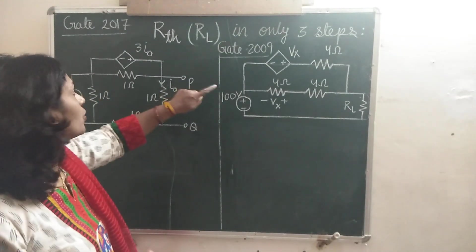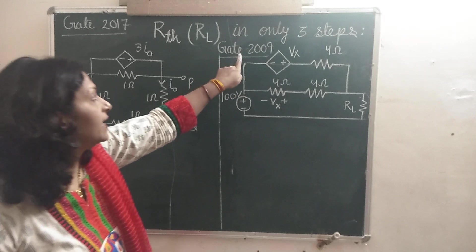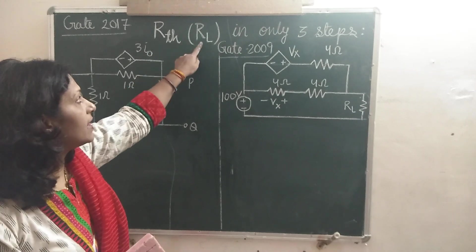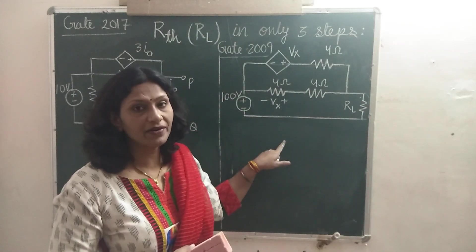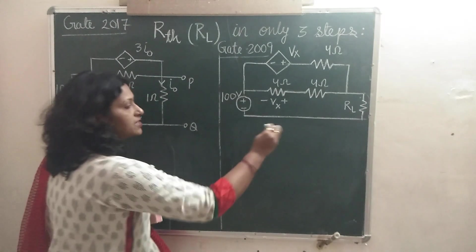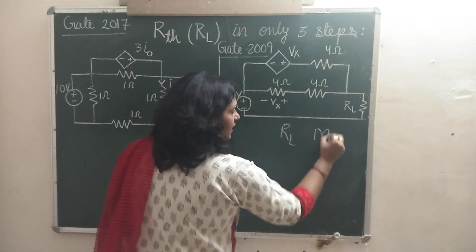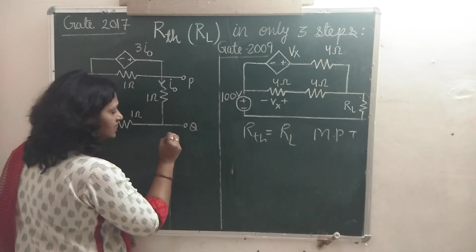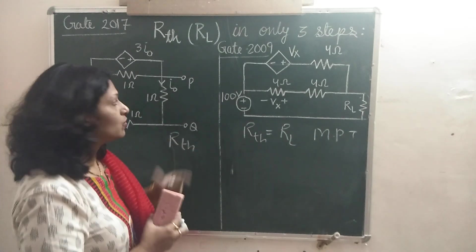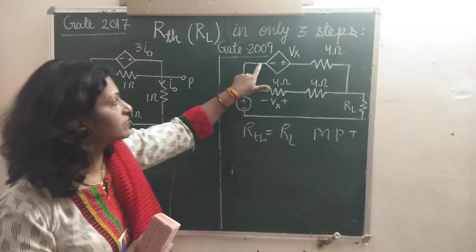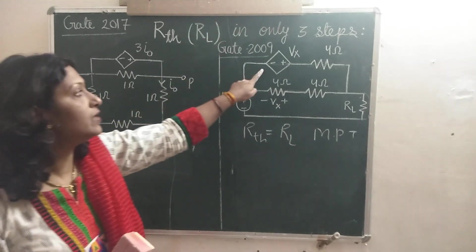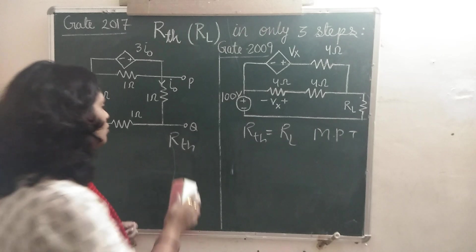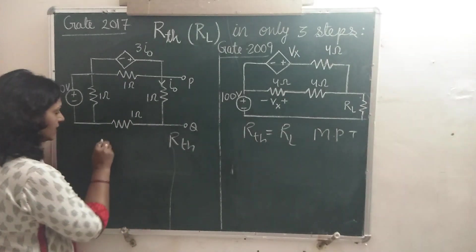In this video, I am solving two problems that were asked in GATE 2009 and 2017. They are related with RTH and RL in the case of maximum power transfer. The value of load resistance in the maximum power transfer case is equal to R-Thevenin. In both cases, we have to find R-Thevenin, and the circuits are having a dependent voltage source or dependent current source. I am giving you a formula for this — RANX.